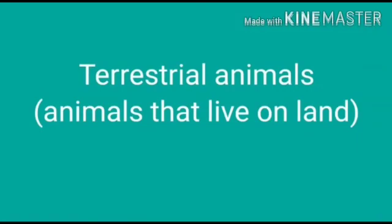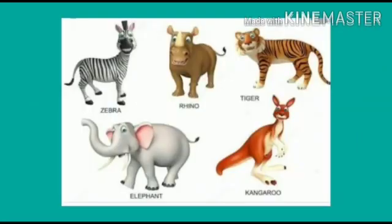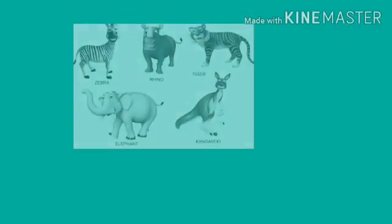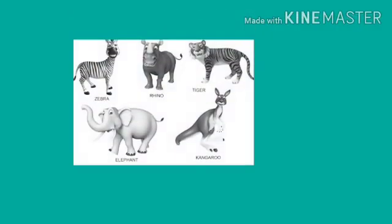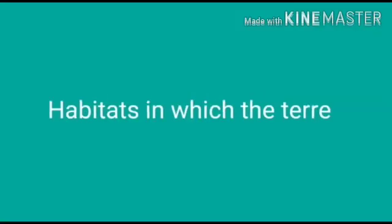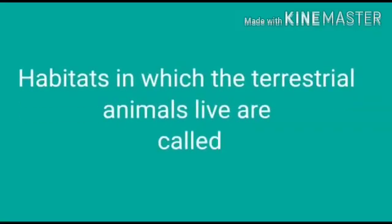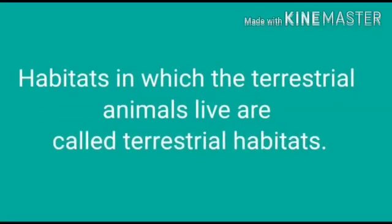Animals that live on land are called terrestrial animals. They have lungs to breathe air. Like lion, tiger, humans, camels, giraffe, etc. The habitat in which terrestrial animals live is called a terrestrial habitat.